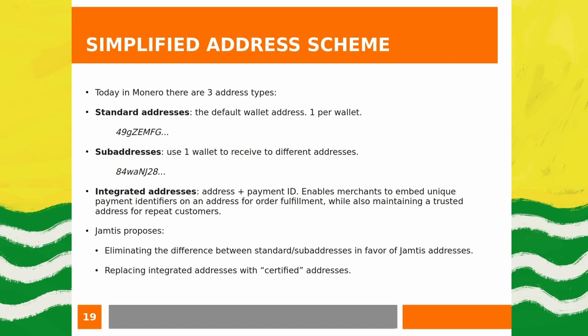Integrated addresses concatenate a payment ID at the end of an address, enabling merchants to embed unique payment identifiers to tie a payment to a particular order while having a single static address that repeat customers can trust. Jamtis proposes replacing the distinction between standard and sub-addresses with a single Jamtis address type, and replacing integrated addresses — which have a set of problems — with certified addresses.